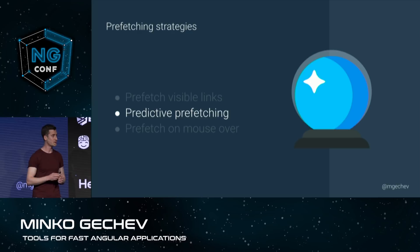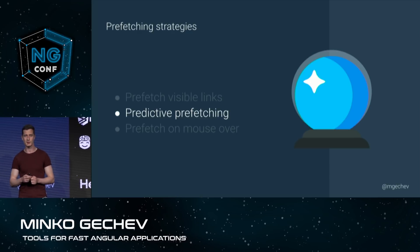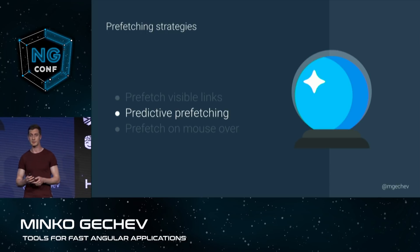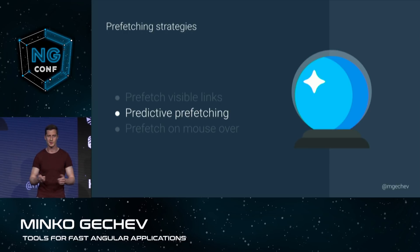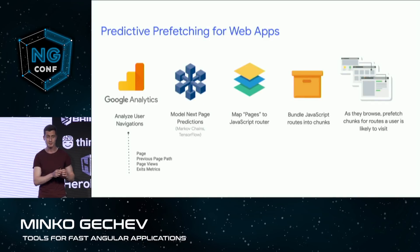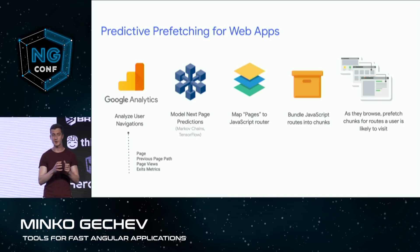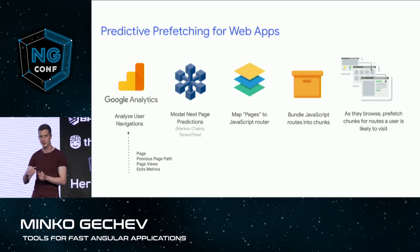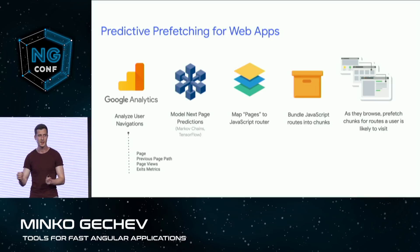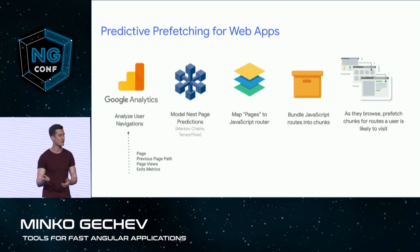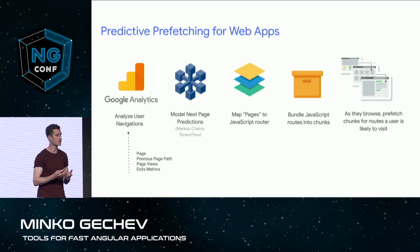Instead, we can use predictive prefetching. This is related to a project announced at Google I/O last year from the Chrome team. We have been working with them quite actively to provide machine learning-driven user experience with a tool called GuessJS. We can consume your Google Analytics data, download your Google Analytics report, map individual pages and navigation patterns to actual JavaScript bundles corresponding to your routing declaration, and then build a Markov chain or a recurrent neural network. This is a predictive model we can use at runtime to guess where the user may go next, so we can prefetch the associated JavaScript.